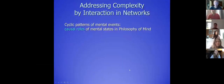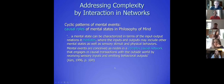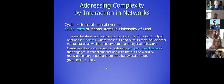The cyclic patterns of mental events can also be found in the philosophy of mind. For example, this is a citation from Kim, a very famous philosopher. He says that a mental state can be characterized in terms of relations it mediates, where inputs and outputs may include mental states, sensory stimuli, or physical behavior, and they form a complex causal network. That's one of the inspirations to think of networks as the modeling format.